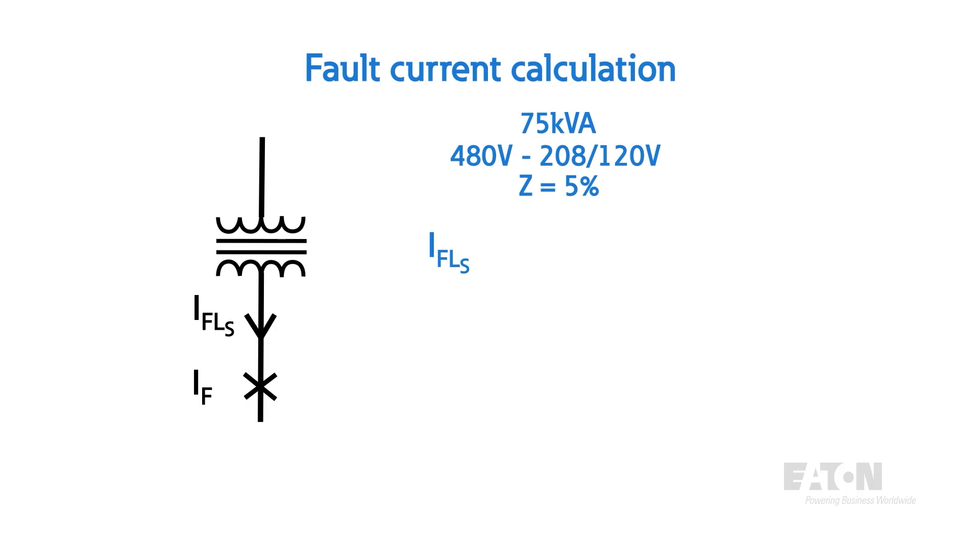In this case, full load amps would be equal to 75 kVA divided by 208 volts times the square root of 3, which coincidentally equals 208 amps. We can get the per unit impedance from the nameplate, otherwise about 5% is a reasonable estimate.